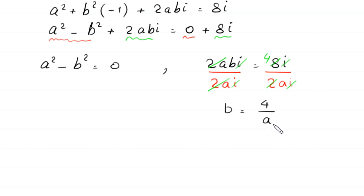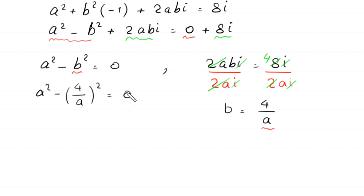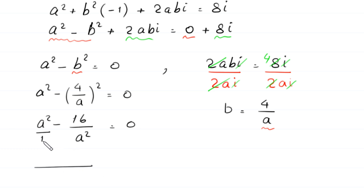In the real equation a squared minus b squared equals 0, we replace b with 4 over a. This becomes a squared minus 16 over a squared equals 0. Taking the LCM, which is a squared, we get a to the power 4 minus 16, all over a squared, equals 0.